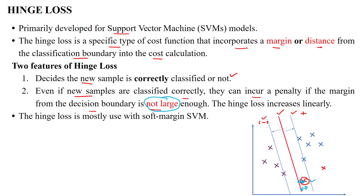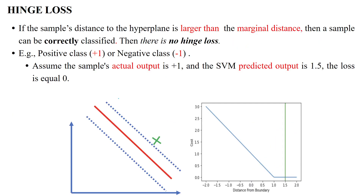The hinge loss increases linearly whenever a data point is close to the decision boundary. The hinge loss is mostly used with soft margin SVM. Hard margin SVM does not allow any misclassified data, so we can use the hinge loss function only with soft margin SVM. In soft margin SVM, the sample distance to the hyperplane is compared to the marginal distance.